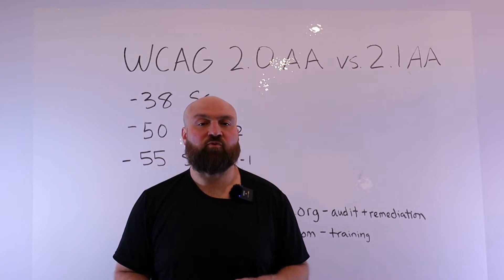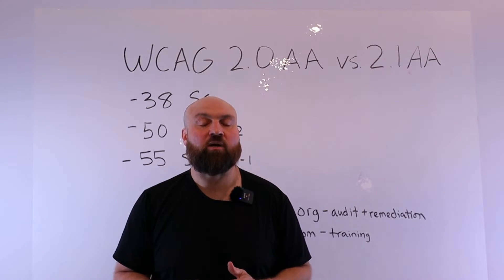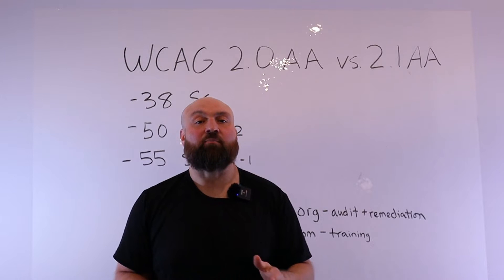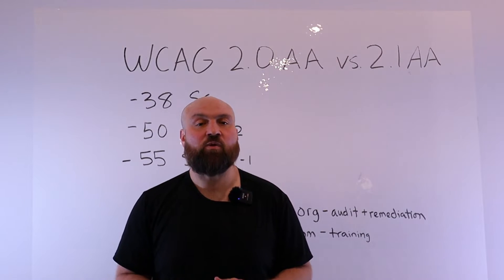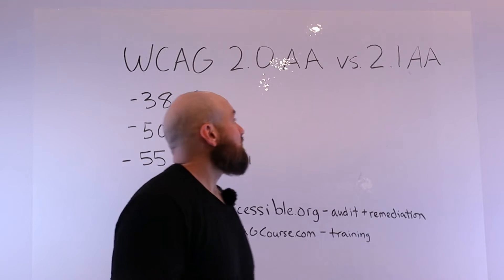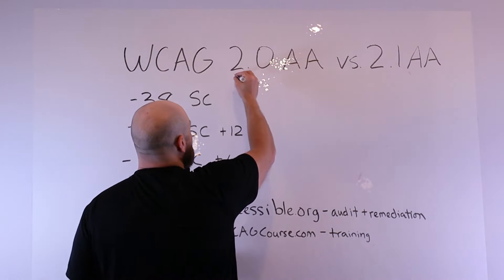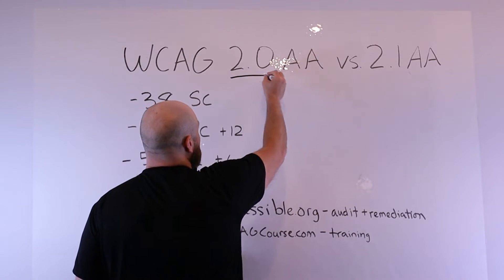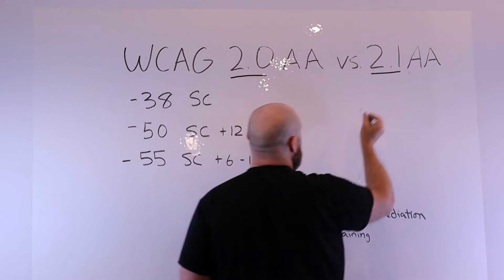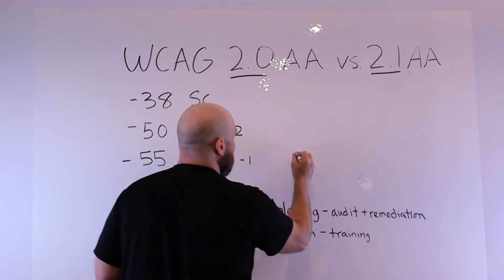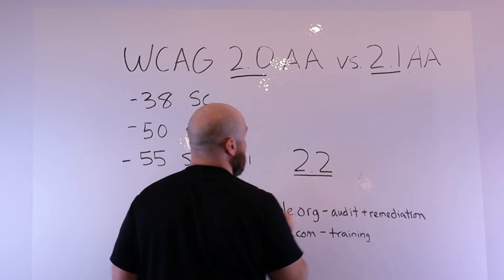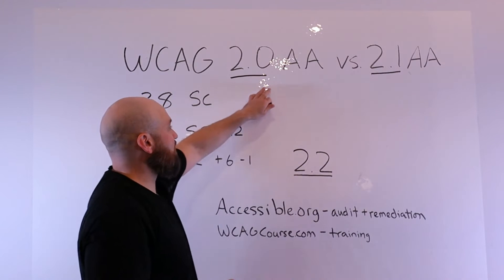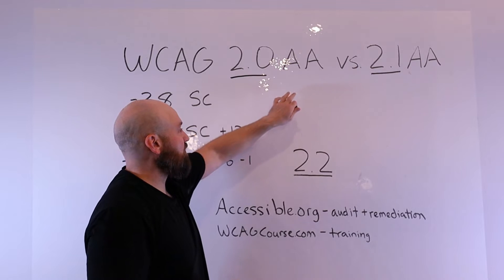Let's go over the difference between the different versions of the web content accessibility guidelines. Most people are concerned with conformance level AA, so we will keep it there. With the different versions, we're primarily looking at 2.0, 2.1, and the just recently published 2.2. So we have these different versions of WCAG.